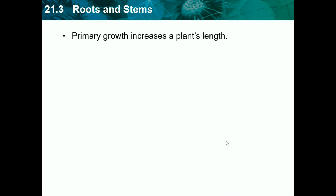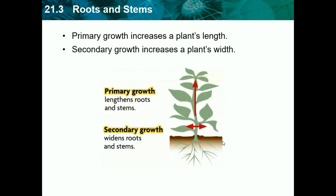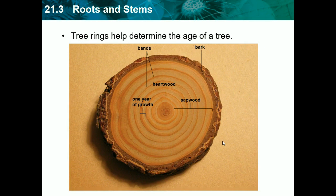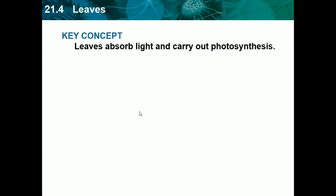Primary growth increases a plant's length, while secondary growth increases a plant's width. Tree rings help determine the age of a tree — counting the rings tells how many years the tree has been growing, with one ring representing one year of growth. You don't need to know how to actually read the rings in detail.